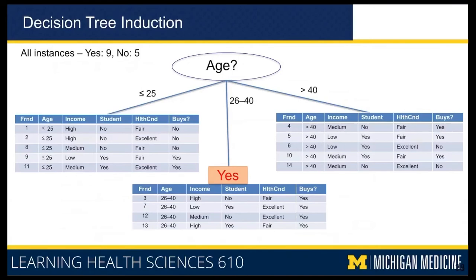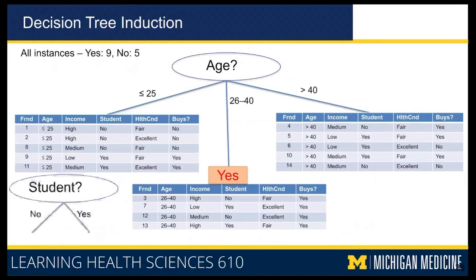Now focusing on the less than 25 group of five instances, you look for another attribute that can split them so all buys-equal-to-no come in one group and all buys-equal-to-yes come in another group. The student feature does exactly that — if student is no, buys is no; if student is yes, buys is yes. So if age is less than 25, the only feature that matters is whether they are a student or not.